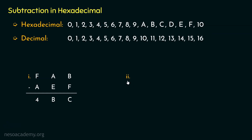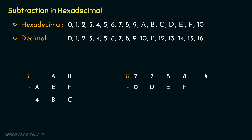Let's perform another subtraction. This time the minuend is 7788 and the subtrahend is 0DEF. Both are 4-digit hexadecimal numbers. The place values are 16⁰, 16¹, 16², and 16³.